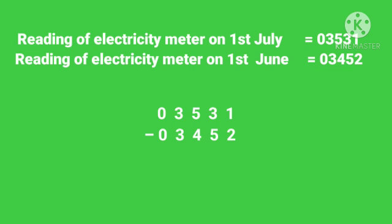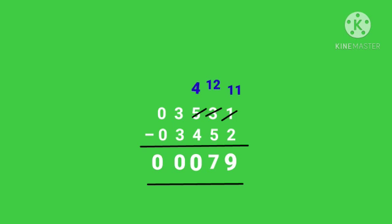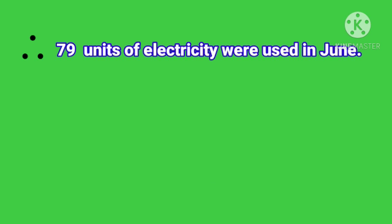1 minus 2 you can't do, so borrow from 3. 3 becomes 2 and 1 becomes 11. 11 minus 2 is 9. Now 2 minus 5 you can't do, so borrow from 5. 5 becomes 4 and 2 becomes 12. 12 minus 5 is 7. 4 minus 4 is 0, 3 minus 3 is 0, and 0 minus 0 is 0. So the answer is 79. Therefore 79 units of electricity were used in June. I hope you have understood this lesson; the remaining will be in the next section. Thank you.